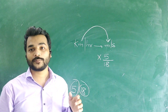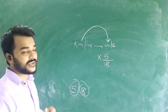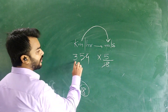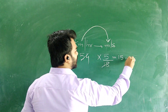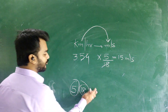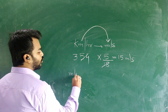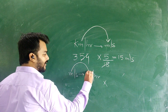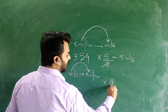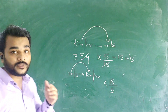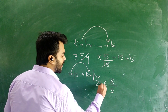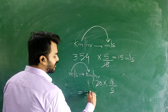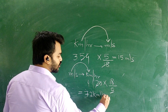To convert km/h to m/s, multiply by 5/18. The number given is 54. Cancelling 18: 3 times 18 is 54, and 3 times 5 is 15. So the answer is 15 m/s. Similarly, to convert m/s to km/h, multiply by 18/5. The number given is 20: 5 times 4 is 20, and 18 multiplied by 4 is 72. So the answer is 72 km/h.